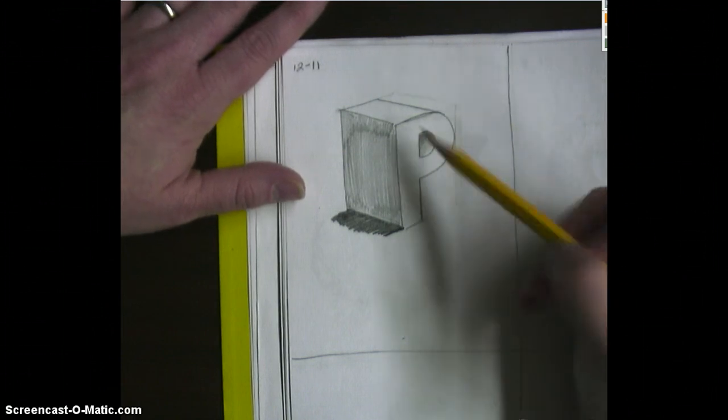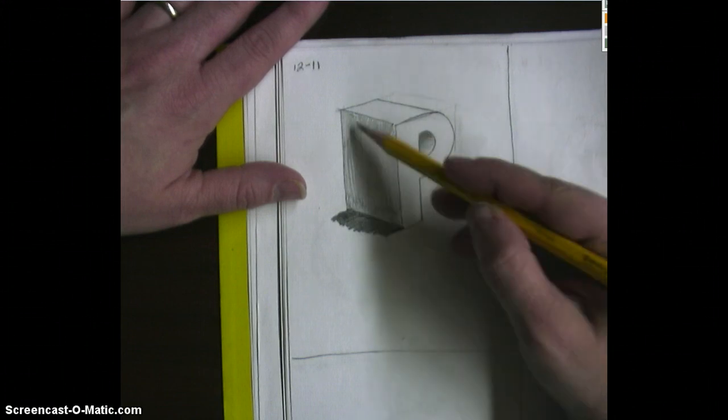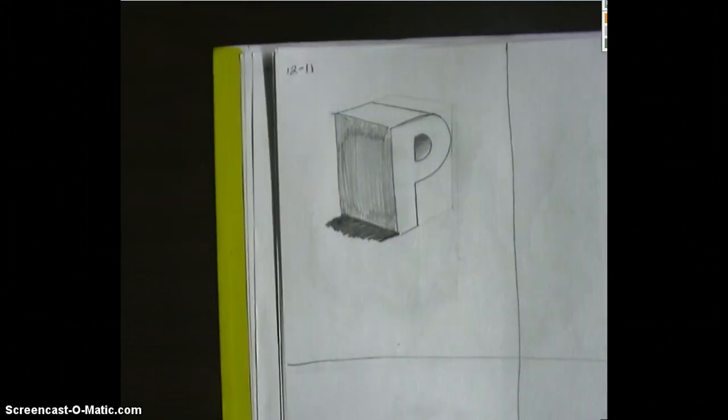Also, we've got shading, a blended shading from dark to light on the inside. We've got a solid light gray on the outside here, and then a cast shadow at the bottom. Okay?